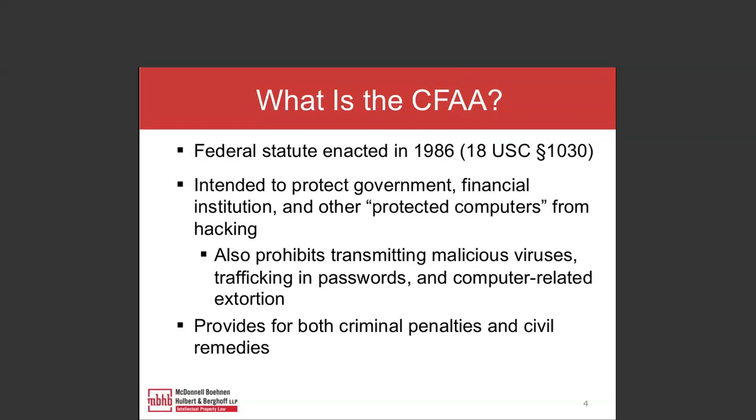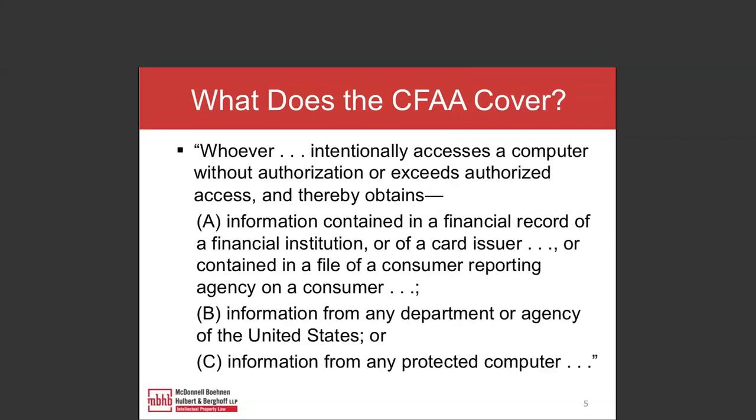The key part of the statute most often litigated is at 18 U.S.C. section 1030(a)(2). The critical language is: 'whoever intentionally accesses a computer without authorization or exceeds authorized access.' The three types of information covered are: financial information, government information, and information from any protected computer. That phrase 'protected computer' is a key concept we'll discuss.